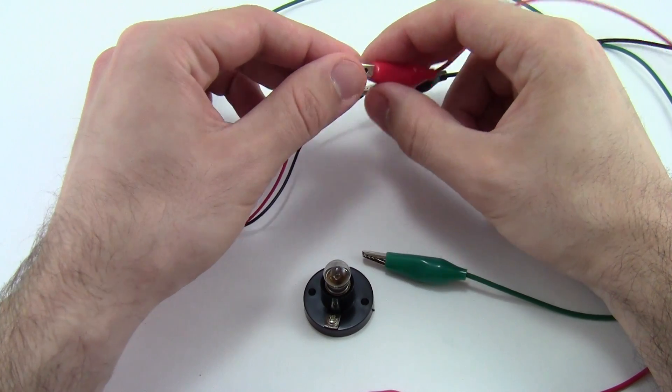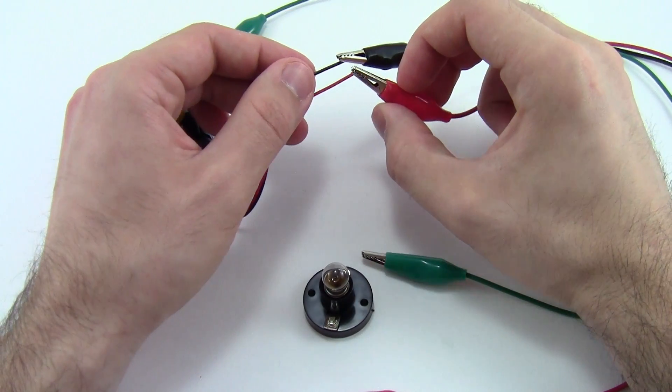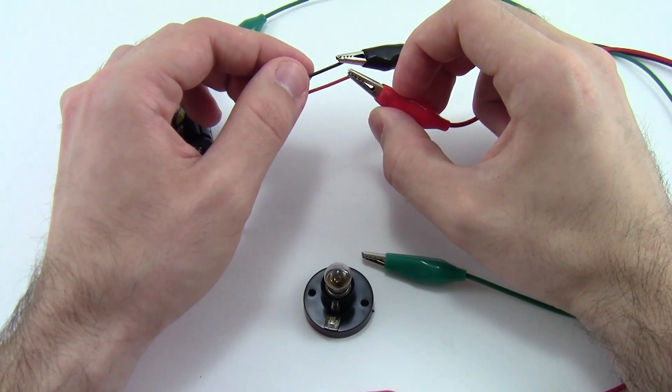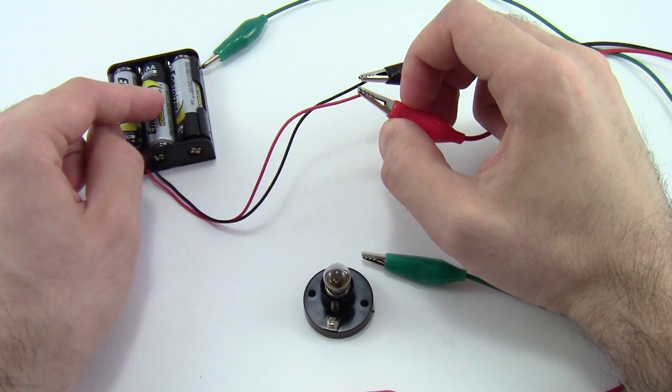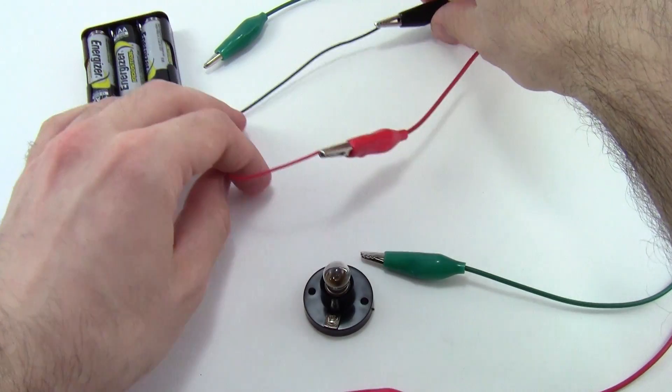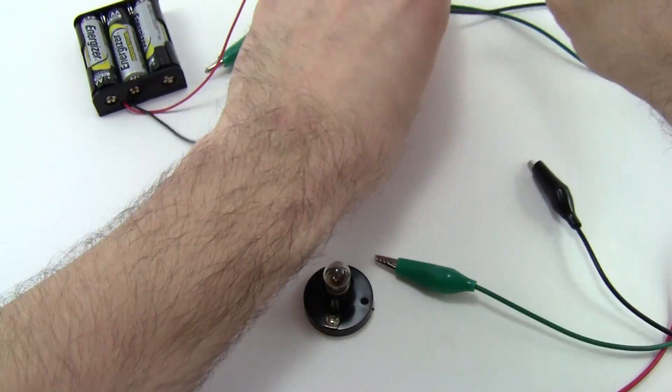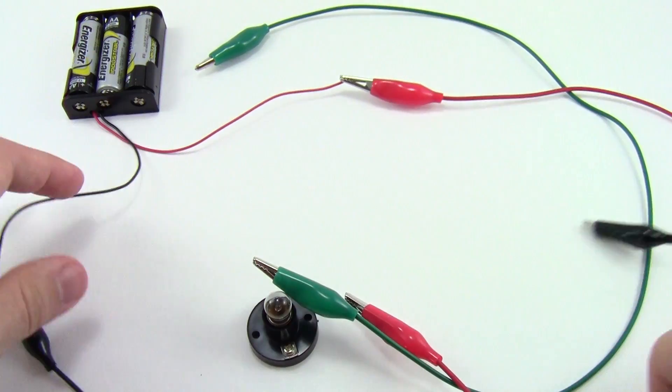Here is one important safety note. At this point, you want to make sure that the red and black alligator clips do not touch each other directly. That will create a short circuit and can cause your battery pack to get very hot. So keep those nice and spaced out, away from each other on your table, so they don't bump into each other.